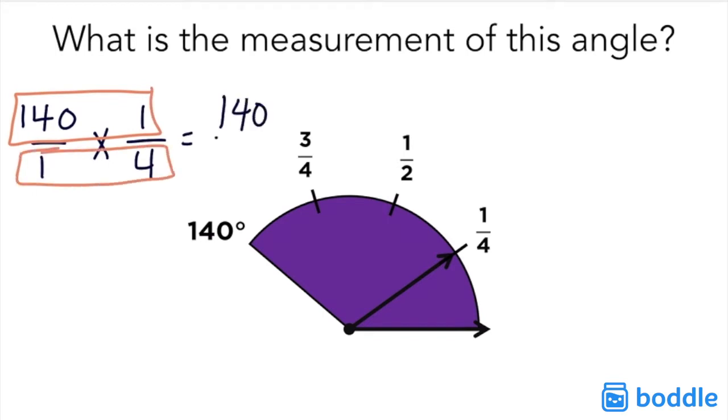1 times 4 equals 4. Now we have 140 over 4, and to find one-fourth of that we just need to divide these two numbers.